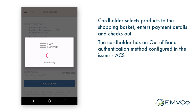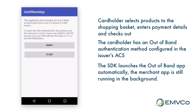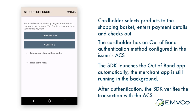The ACS provides the necessary information to the SDK to launch the out-of-band authentication app. This can be done automatically, or the cardholder may be prompted to launch the authentication app on their own. Once the cardholder has completed the authentication in the out-of-band authentication app, the transaction continues in the merchant application. The cardholder will select the continue button in the SDK and the transaction will continue.